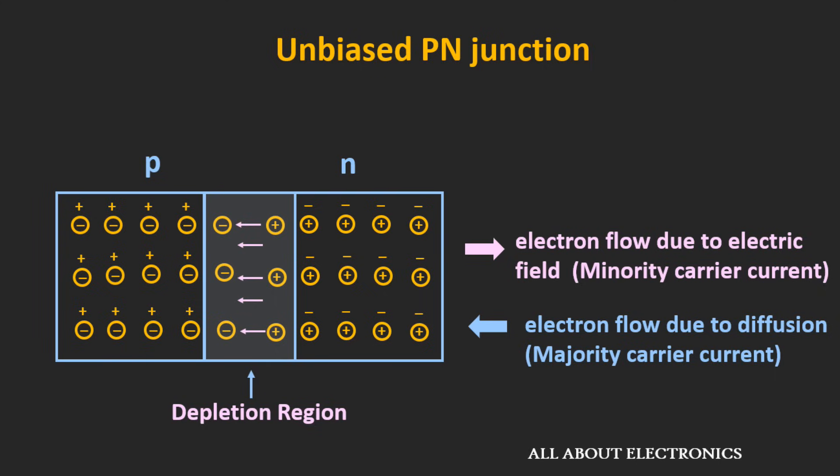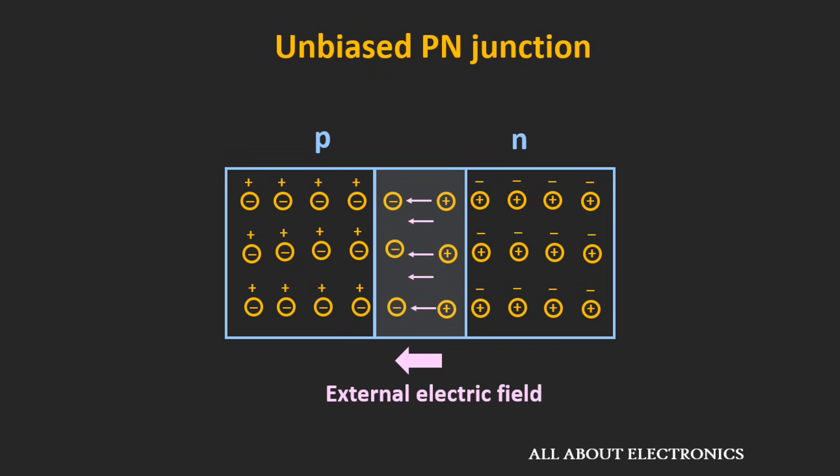Whenever the p-n junction is not biased, the overall current in the circuit is zero. So if the majority charge carriers on both n and p sides want to cross the depletion region, they require an external biasing voltage. If we apply the external field in the same direction as the built-in electric field, the depletion region will offer more resistance to majority carriers. But if the applied external field is in the opposite direction to the built-in electric field, the resistance offered by the depletion region will reduce. Based on that, let's see the two types of biasing for this p-n junction.